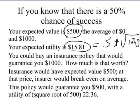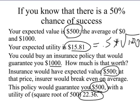You could buy an insurance policy that would guarantee you $1,000. The insurance would have an expected cost of $500 — the difference between the $500 expected value of your gamble and the $1,000 they're promising to pay you. The insurer would break even, on average, if you pay $500. This policy guarantees you $500: if you succeed, they give you $1,000 from which you pay the $500 premium; if you fail, they give you $1,000 from which you pay the $500 premium. This policy guarantees you $500 with a utility of 22.36.